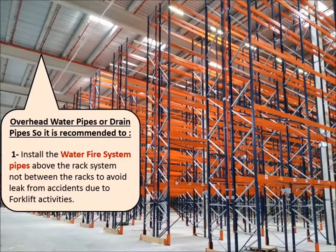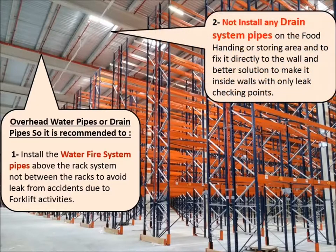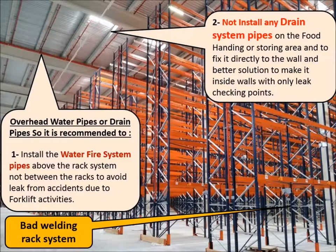Regarding upper water pipes or drain pipes: the recommendation is to install the water/fire system above the rack system — not between the racks — to avoid any leaks from forklift accidents. For drainage, it is very important to avoid installing drain pipes in food handling or storage areas. It is recommended to fix them directly to the side wall of the warehouse, ideally running inside the wall, with access points for maintenance checks. Bad welding in the rack system is also a hazard, though considered lower risk.